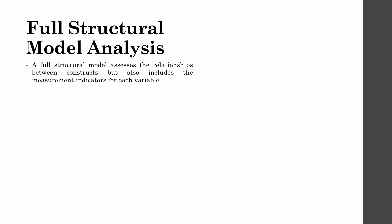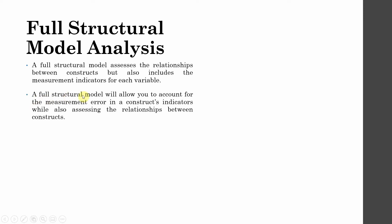Your constructs are not transformed into a composite variable — you have all the indicators for your constructs in your full structural model analysis. A full structural model allows you to account for the measurement error in a construct's indicators while also assessing the relationship between constructs. Since you have your indicators, each construct with its indicators will have an error term.